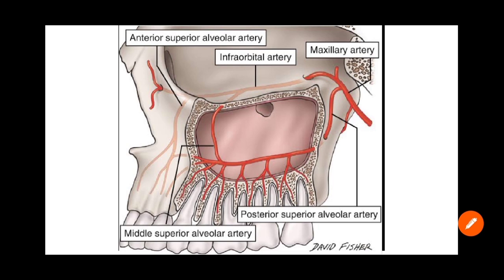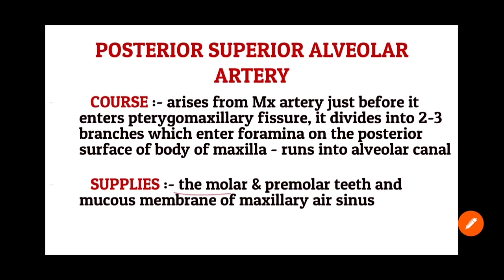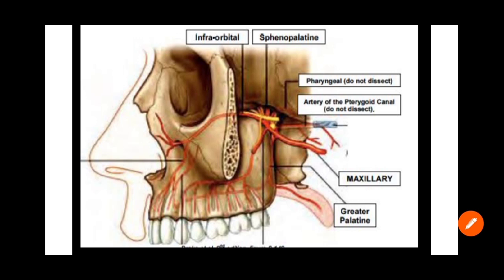P stands for posterior superior alveolar artery. It arises from the maxillary artery just before it enters the pterygomaxillary fissure, divides into two or three branches, enters foramina on the posterior surface of the body of the maxilla, and runs into the alveolar canals of the molars and premolars. It supplies the molar and premolar teeth and the mucous membrane of the maxillary sinus.